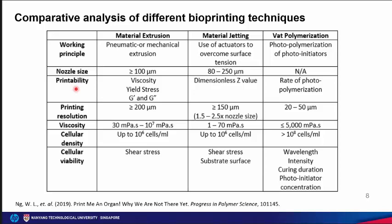For printability, material extrusion is dependent on viscosity, yield stress, storage and loss modulus, thixotropic properties (the ability to return to original viscosity upon removal of shear stress), layer thickness, and degree of overlapping. For material jetting, printability is dependent on the dimensionless Z-number, which relates to ink viscosity, surface tension, density, and nozzle size. Critical parameters include formation of satellite droplets, droplet impact philosophy, and droplet-substrate interaction.